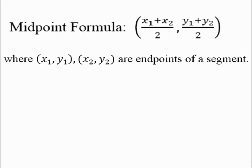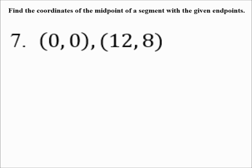If you're looking for the midpoint in the coordinate plane, use the midpoint formula: (X1 plus X2) divided by 2, comma, (Y1 plus Y2) divided by 2. Your answer is a point, so it's written in parentheses with a comma. X1, Y1 and X2, Y2 are the endpoints of the segment.